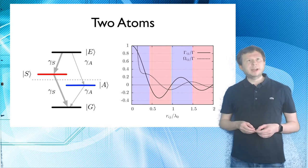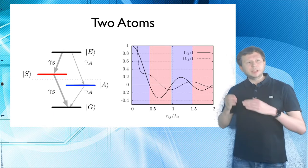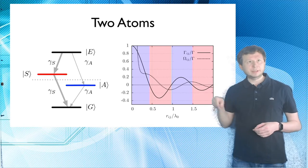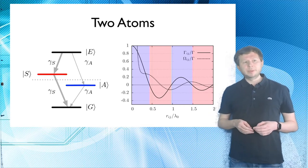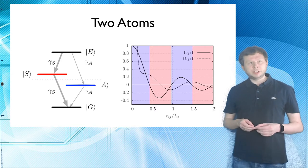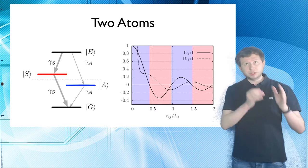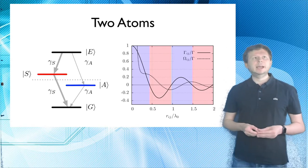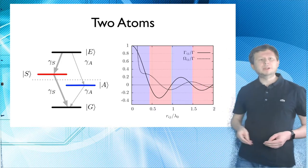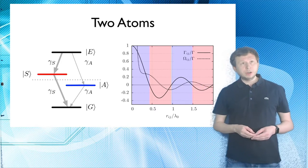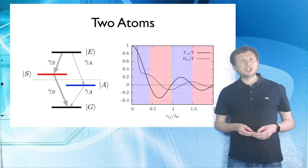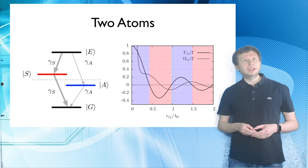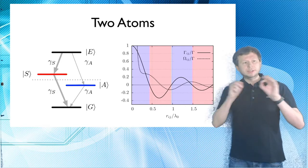So you can do the math and then find out that basically the energy shift that occurs in the single excitation manifold, so the upward shift of the symmetric state and downward shift of the asymmetric state, as well as the collectively enhanced decay rate and also the collectively suppressed decay rate is a function of the interatomic distance and the dipole orientation. And this is what is shown on the plot here. So the solid curve shows sort of the addition or subtraction of the spontaneous emission rate and the dashed curve shows the energy shift that occurs in the single excitation manifold.